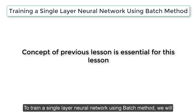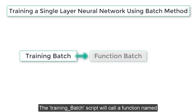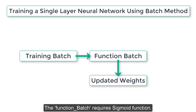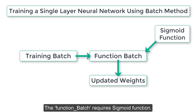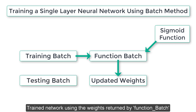To train a single layer neural network using the batch method, we will prepare a MATLAB script named training_batch. This script will call a function named function_batch, which will return the updated weights. Function_batch requires a sigmoid function, which we will also implement. Finally, we will write a script named testing_batch to test the trained network using the weights returned by function_batch.